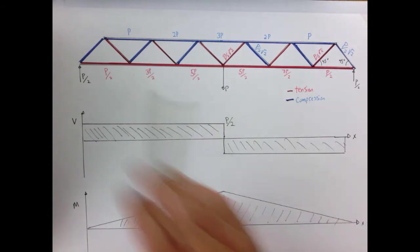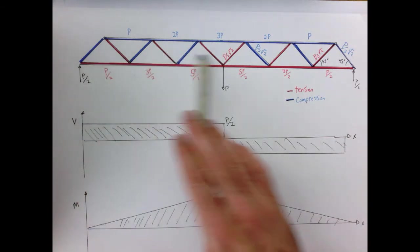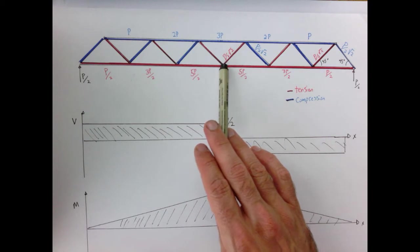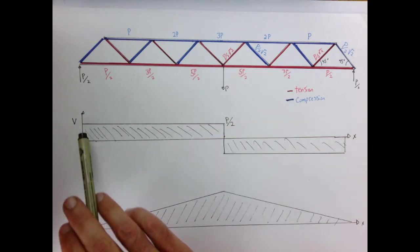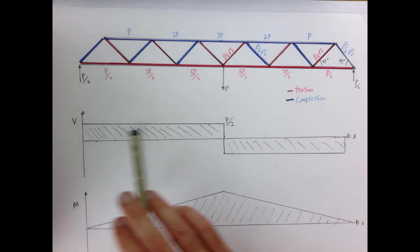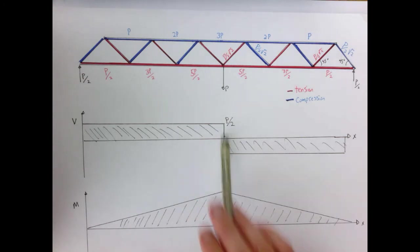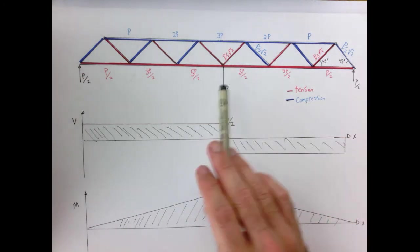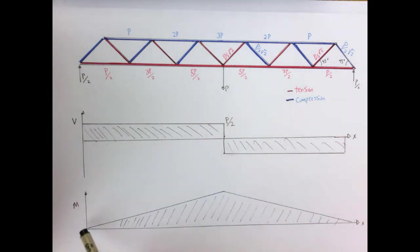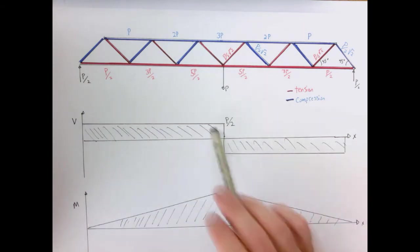Here we're thinking of the truss as a structure spanning across a distance where we have a load in the center. The shear goes from a value of p over 2 to negative p over 2 right at the center. The moment increases linearly as we go towards the center and then decreases as we go towards the other end. So the bending moment internal to the structure is zero at the two ends, maximum in the middle. In the shear we have two regions that are equal but opposite in sign.